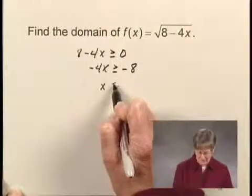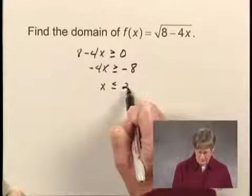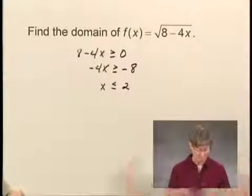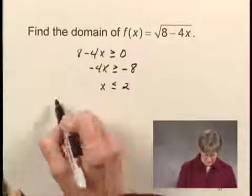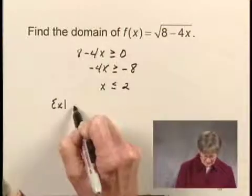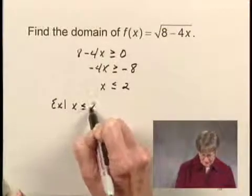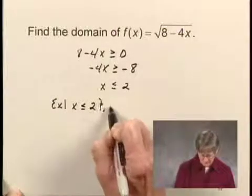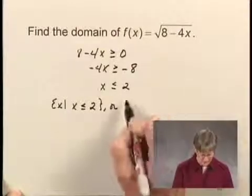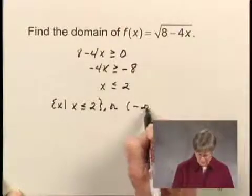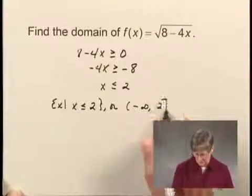So I have x is less than or equal to 2. Now we can write the domain. The domain is the set of all x such that x is less than or equal to 2. Or we can write this in interval notation as the interval from negative infinity to 2, including the number 2.